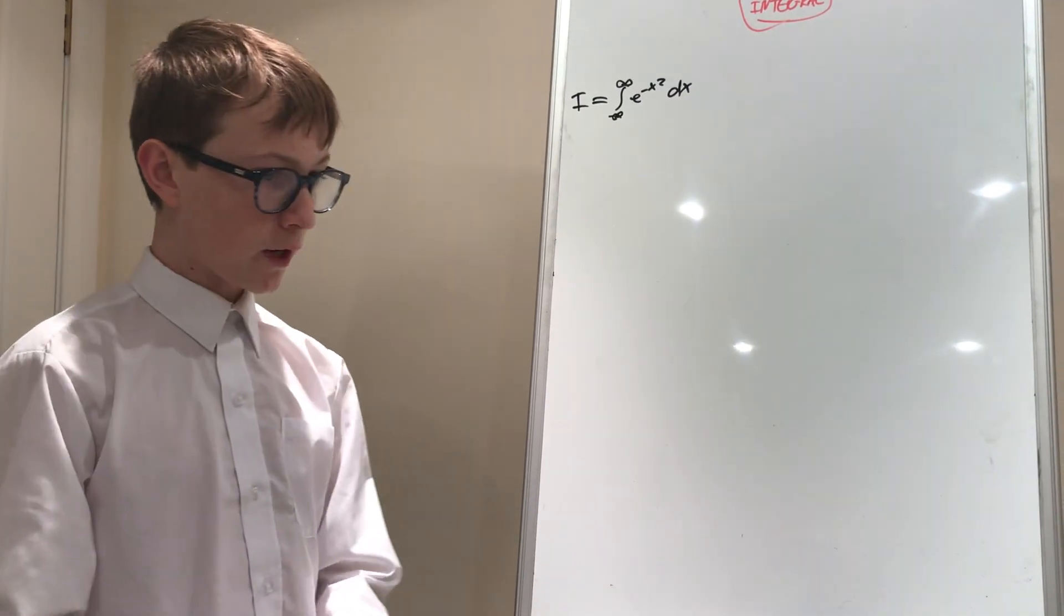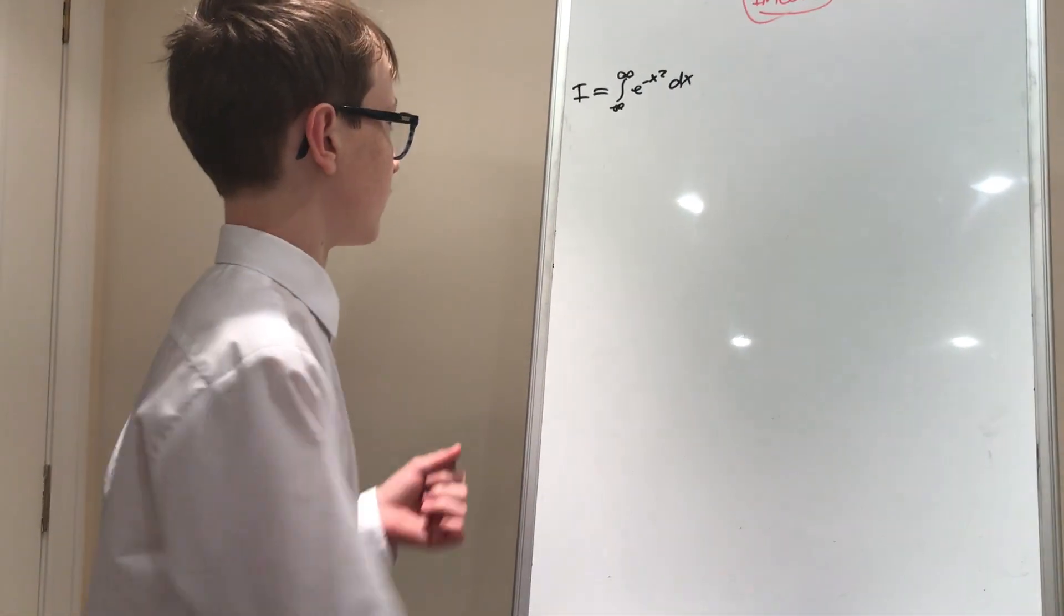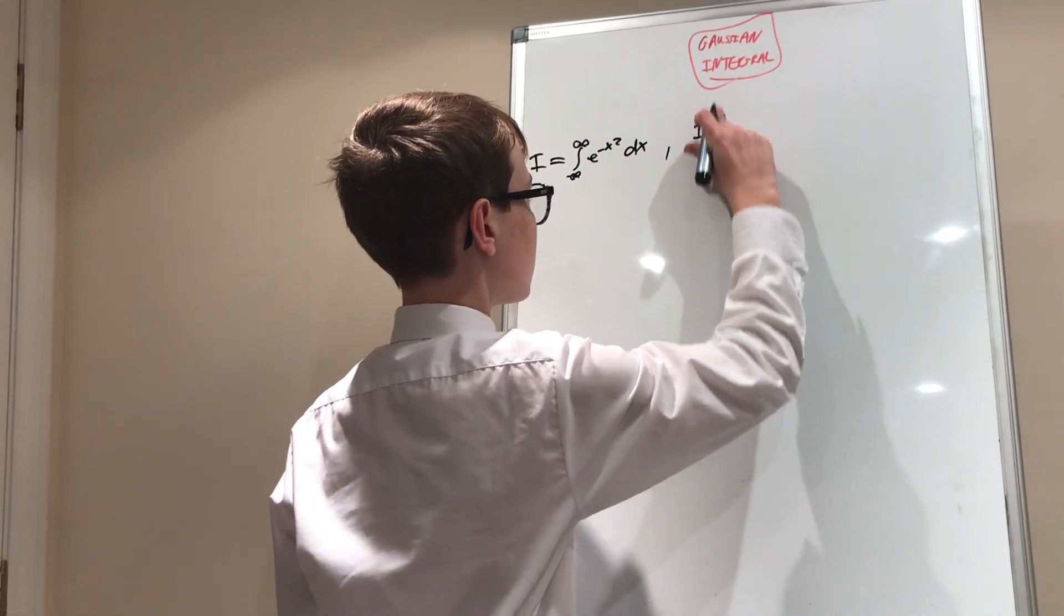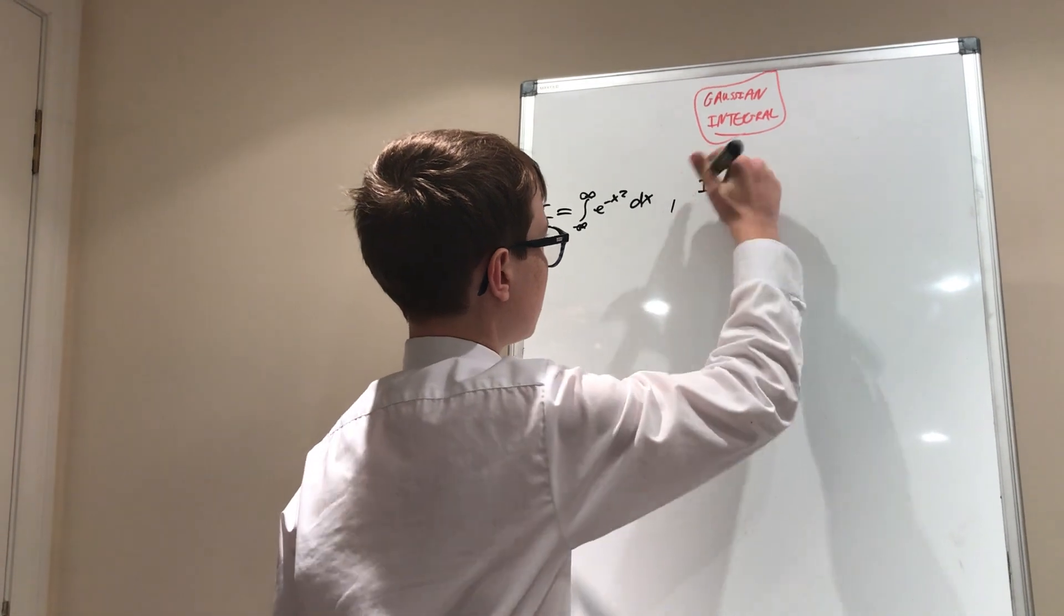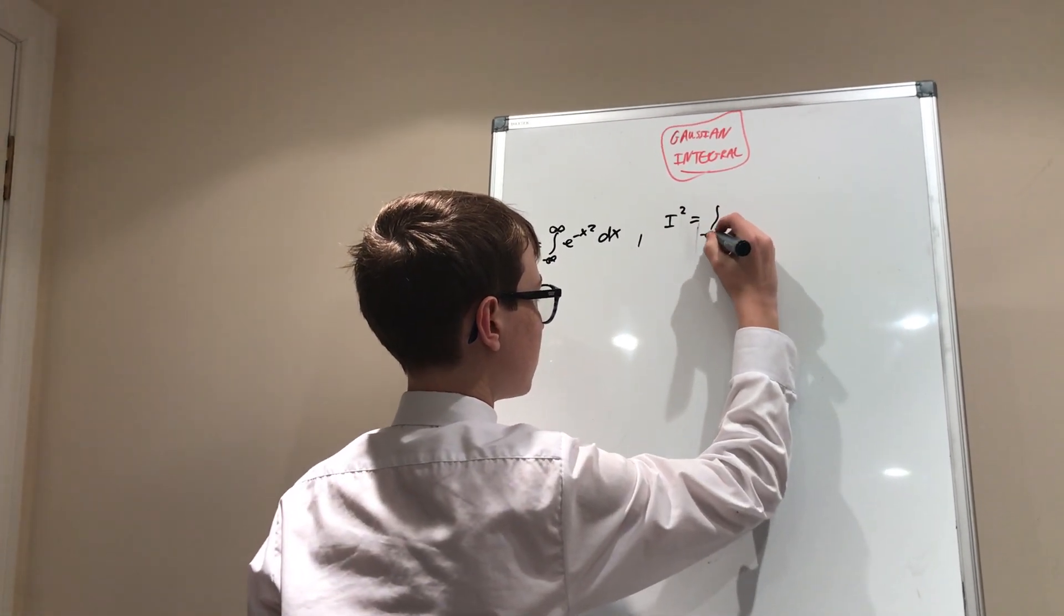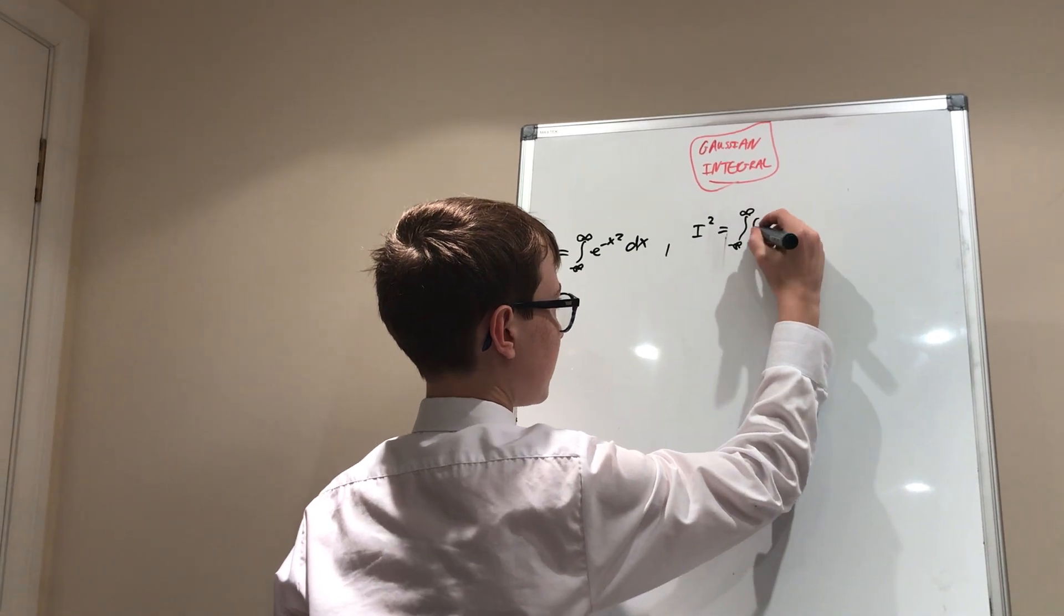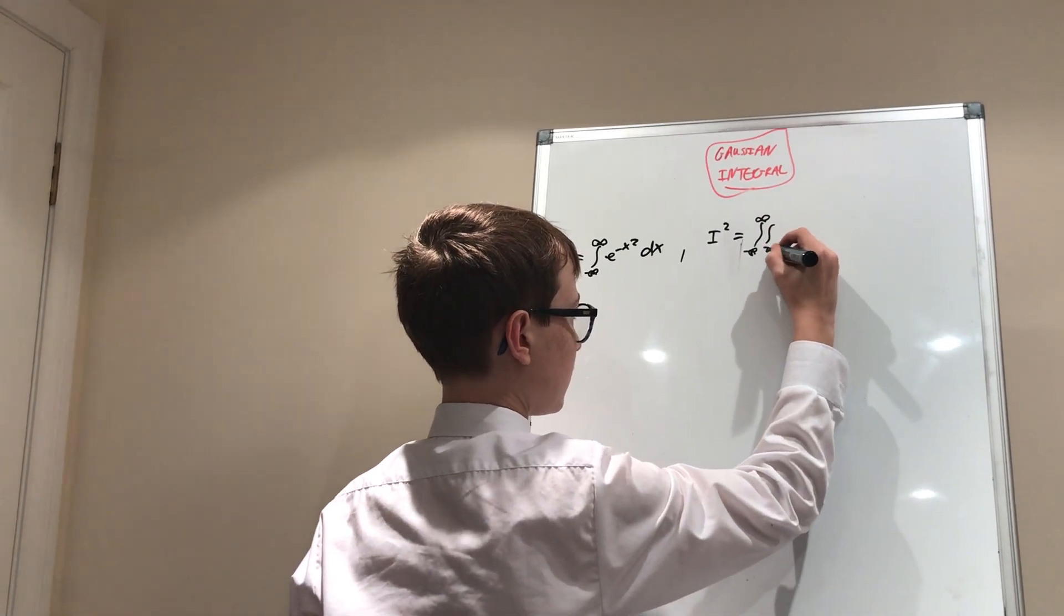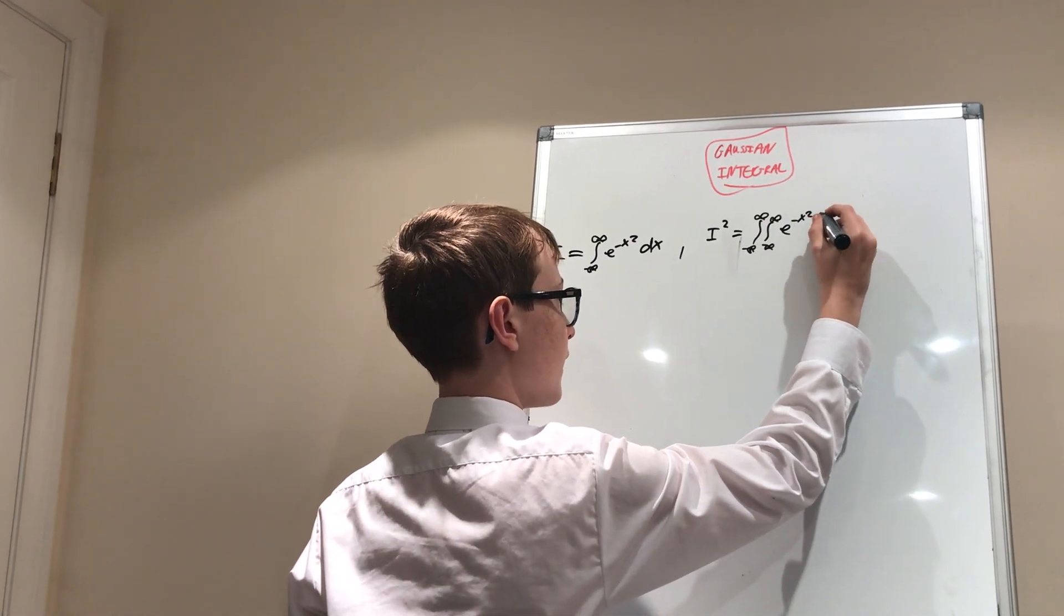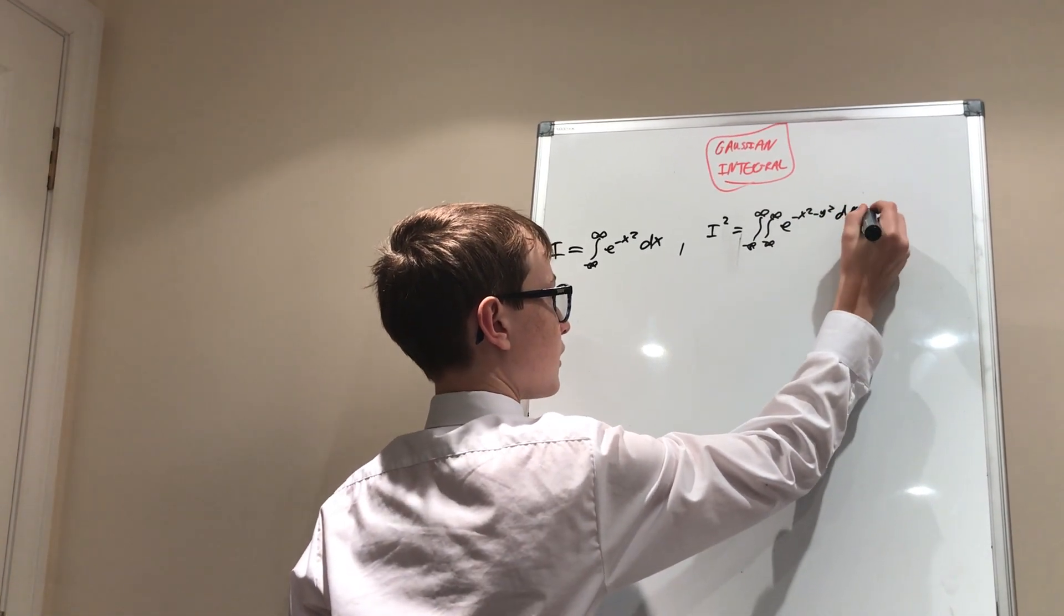But first we have to square this integral. So i squared equals the double integral, both from negative infinity to infinity, of e to the negative x squared minus y squared, dy dx.